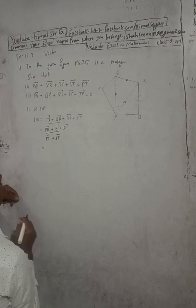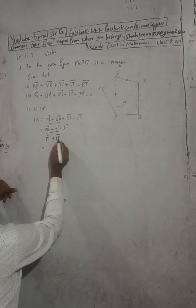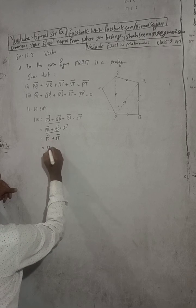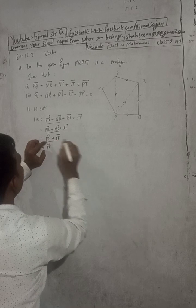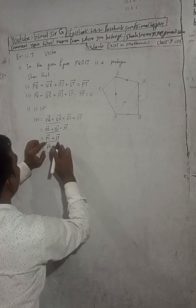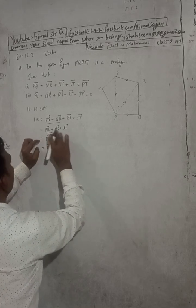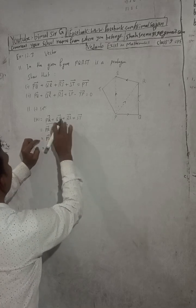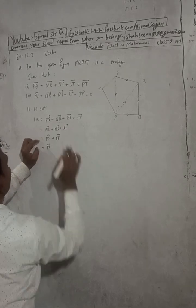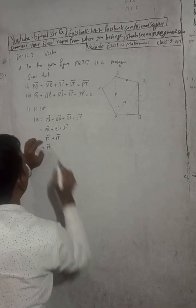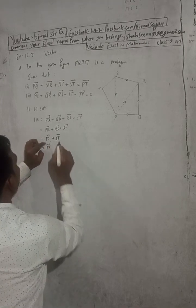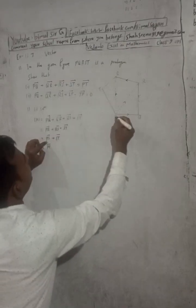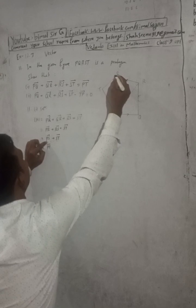Now PS plus ST — CS is the same here. So PT: this is PT vector. PS vector — just the PS vector side, you are going to land on the other side. This is PS vector. Just the PS.